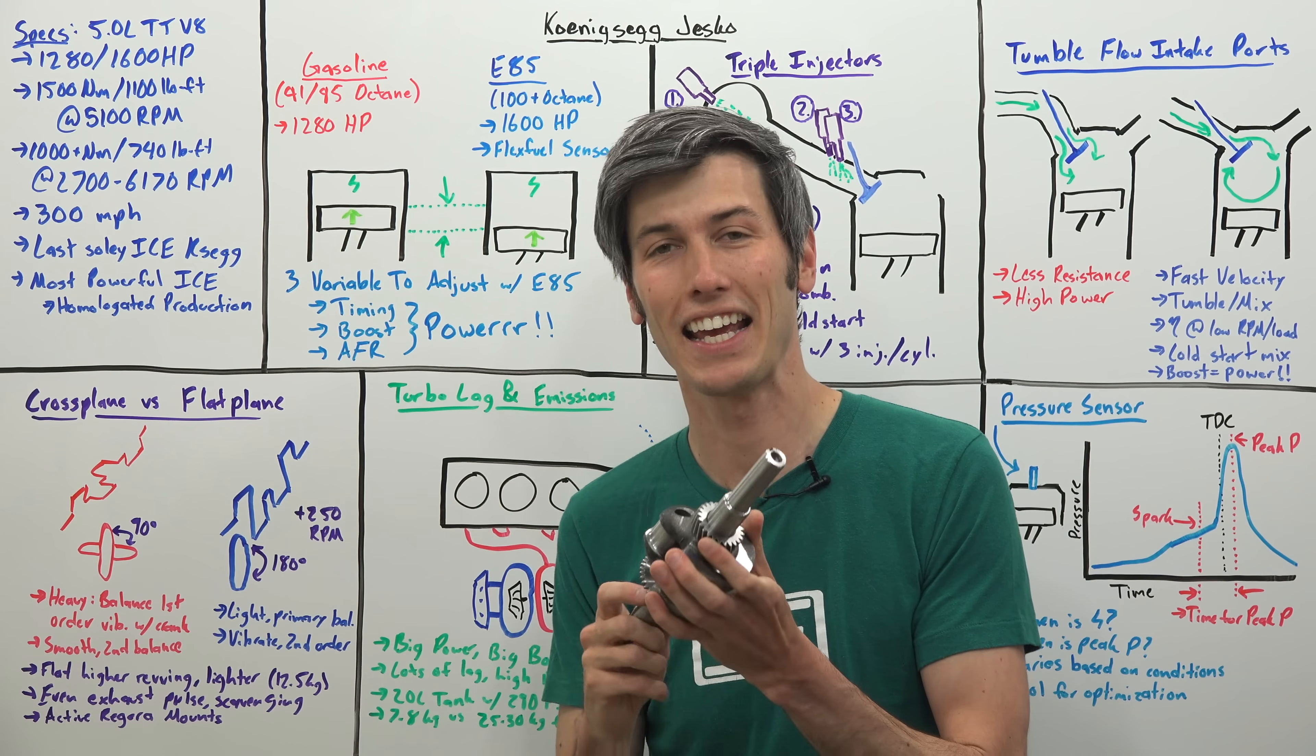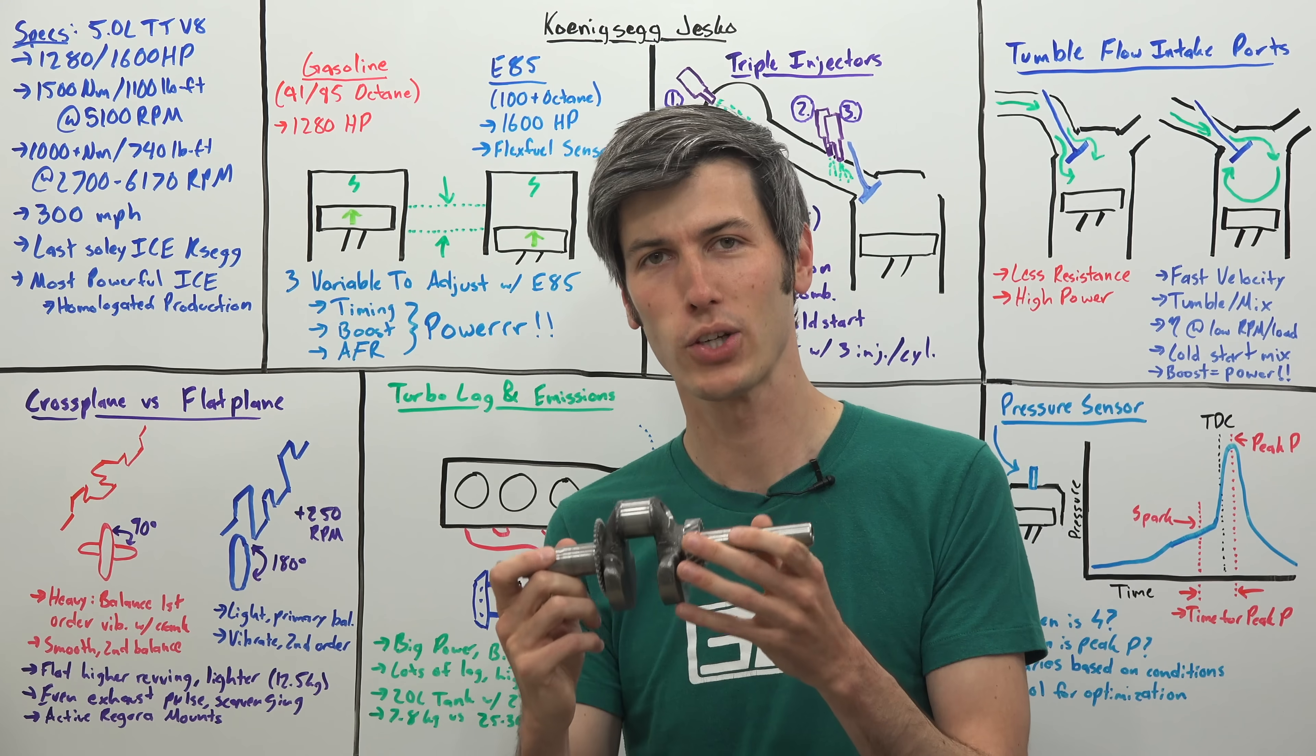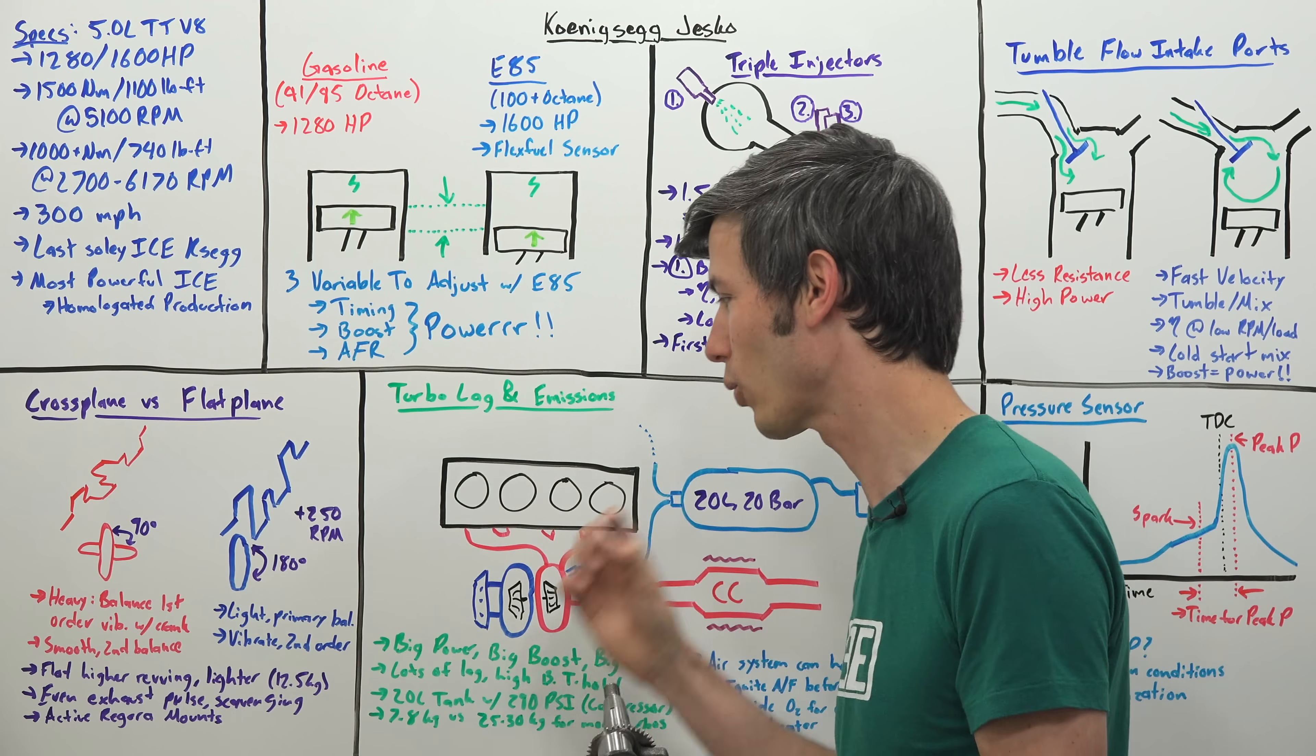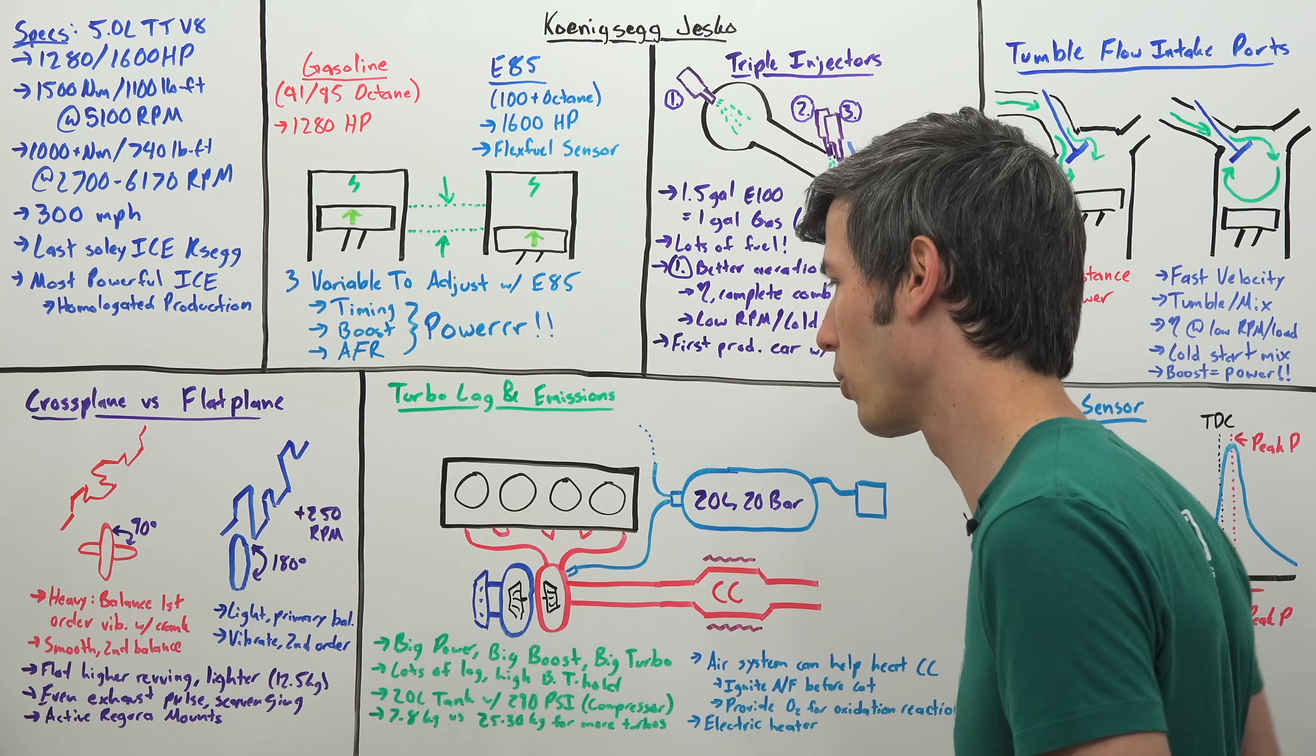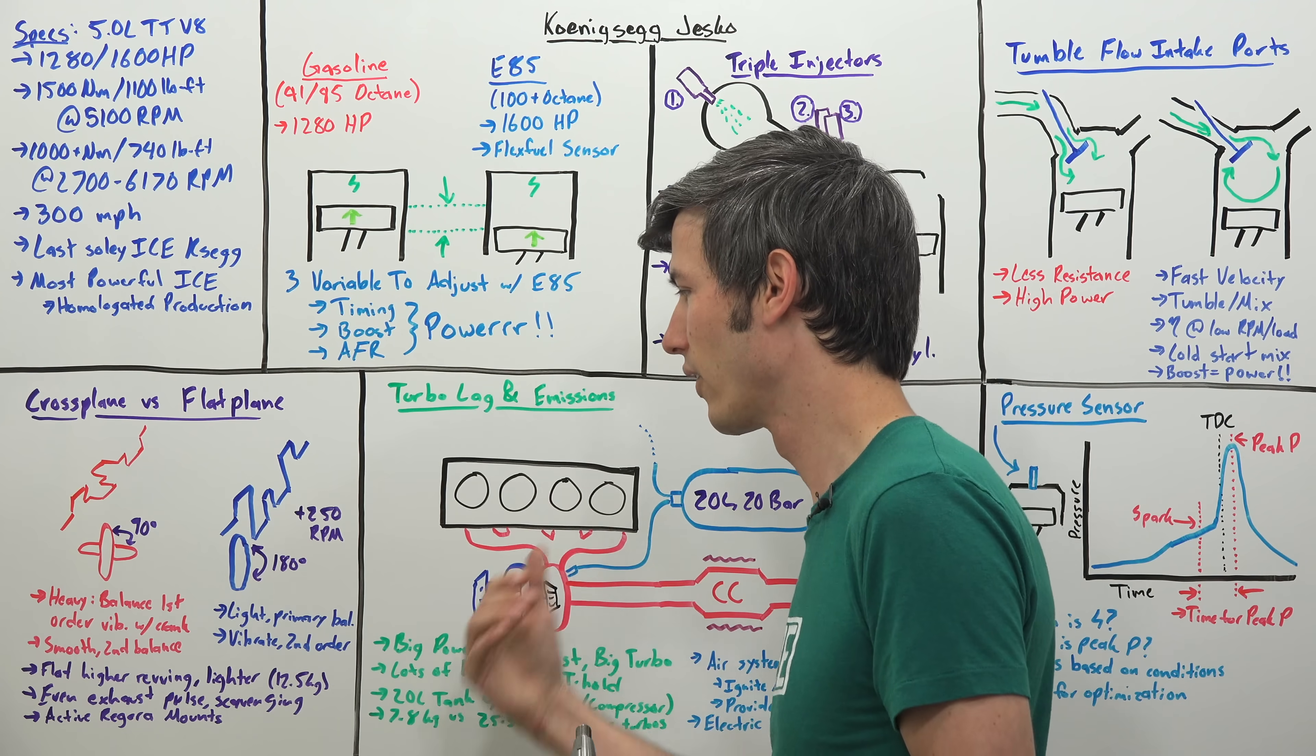In Koenigsegg's example, they're able to increase the red line from 8250 up to 8500 rpm here with the Jesko. They claim that they have the lightest crankshaft for a V8 engine in production, just 12.5 kilograms.